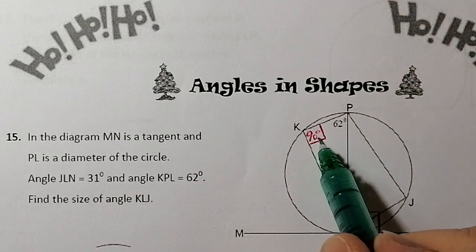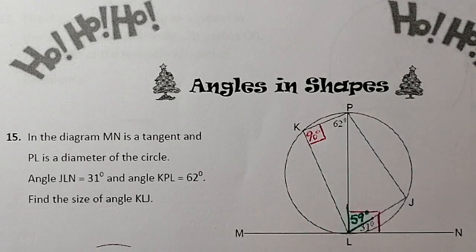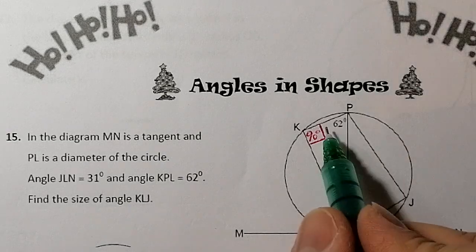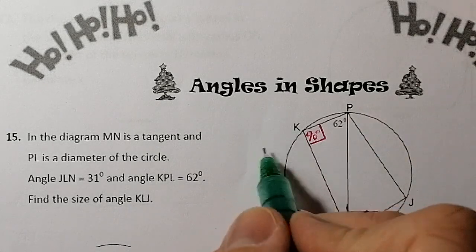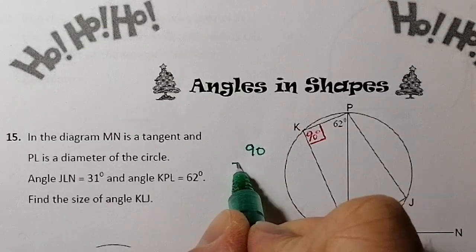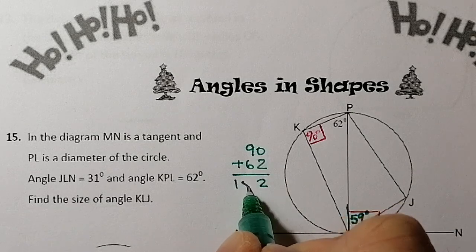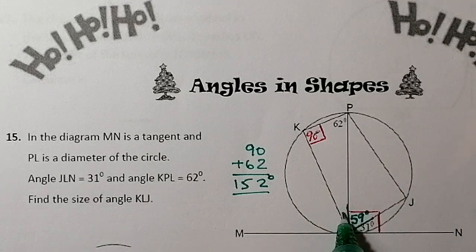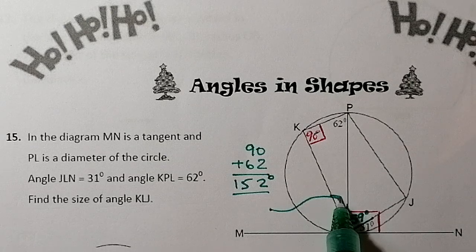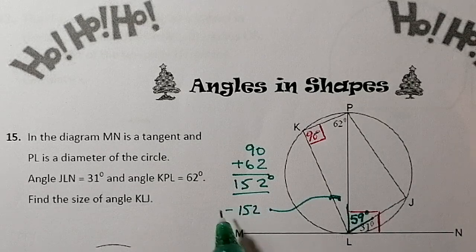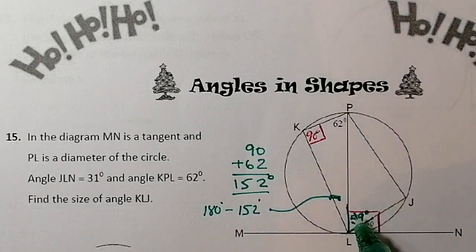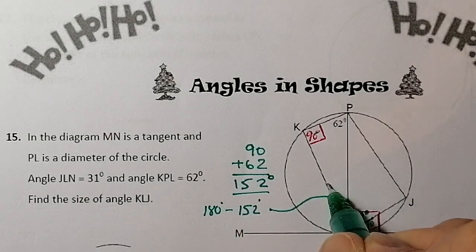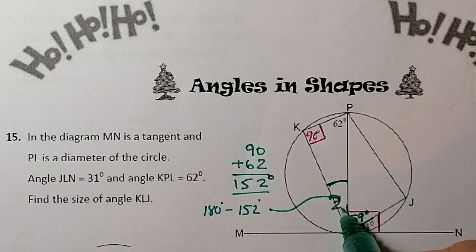I'll write 90 in so we know that's 90 degrees. That angle is 90, and that one there is 62. Using the angles in a triangle property — angles in a triangle add up to 180 — I'll add the two known angles together: 90 plus 62 gives me 152 degrees. To find this remaining angle, I take 152 away from 180, which leaves me with 28 degrees. So that angle is 28 degrees.